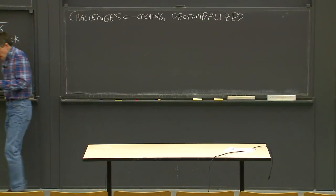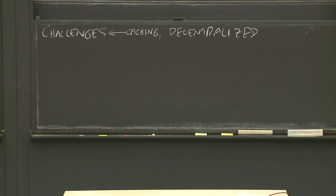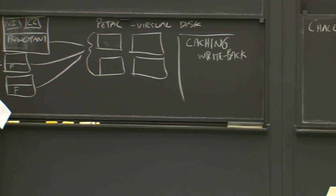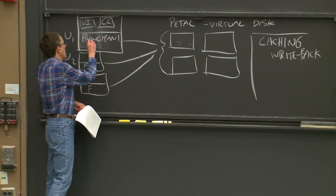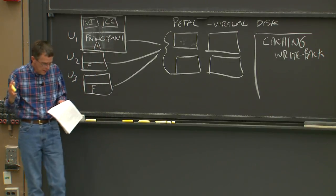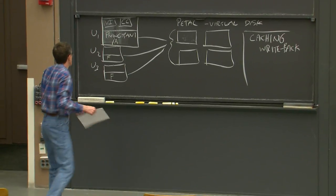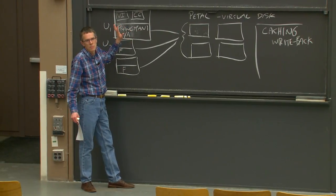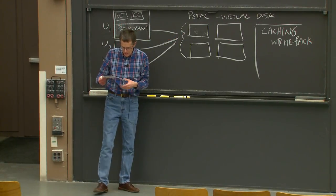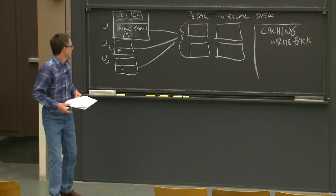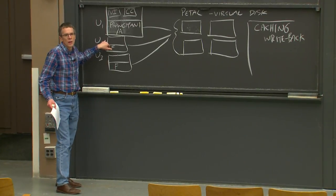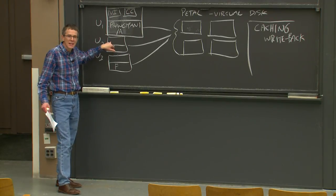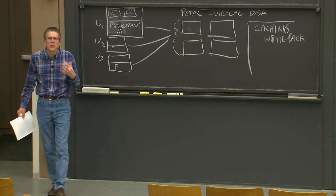The first challenge: suppose workstation one creates a file slash A. Initially it just creates this in its local cache — it may fetch the current slash directory from Petal, but when it creates the file it just modifies its cached copy and doesn't immediately send it back to Petal. The immediate problem: suppose the user on workstation two tries to get a directory listing of slash. We'd really like that user to see the newly created file.